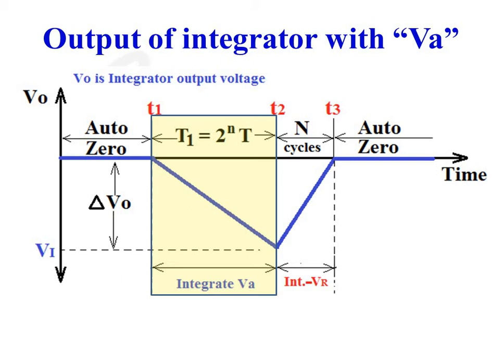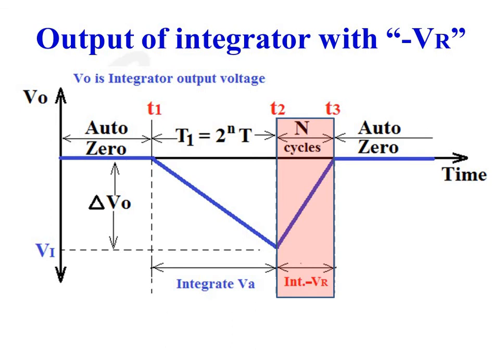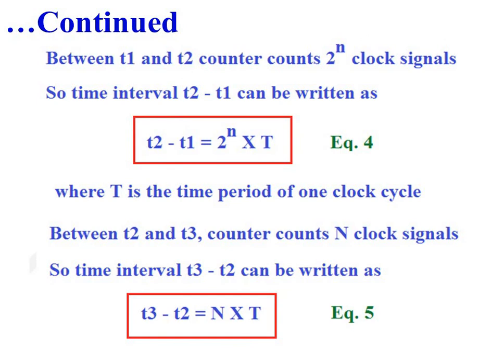This is the output of the integrator when analog input signal VA is connected to the buffer amplifier, and this is the output when reference voltage minus VR is connected to the input of the buffer amplifier. Between T1 and T2, the n-bit counter counts 2 raised to n clock signals, so T2 minus T1 equals 2 raised to n multiplied by T, where T is the time period of one clock cycle. Between T2 and T3, the counter counts n clock cycles, so T3 minus T2 equals n multiplied by T.